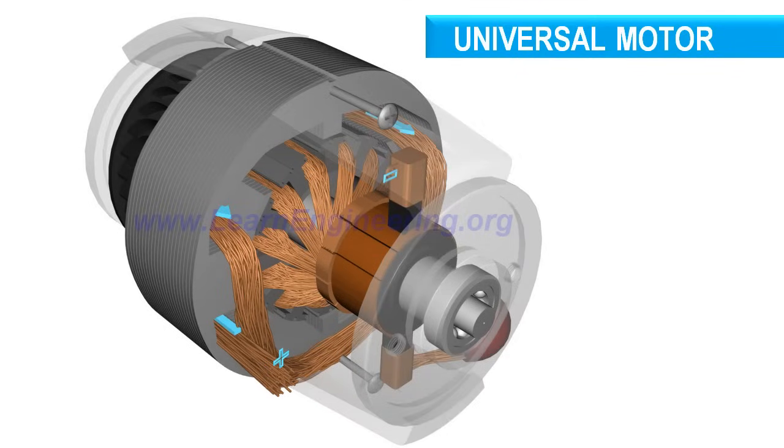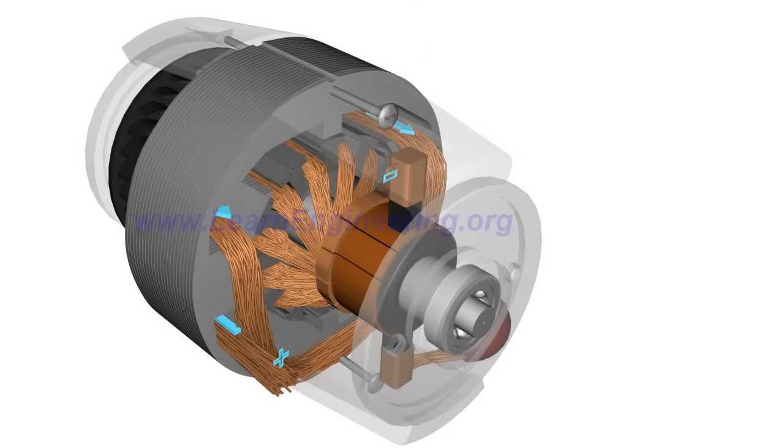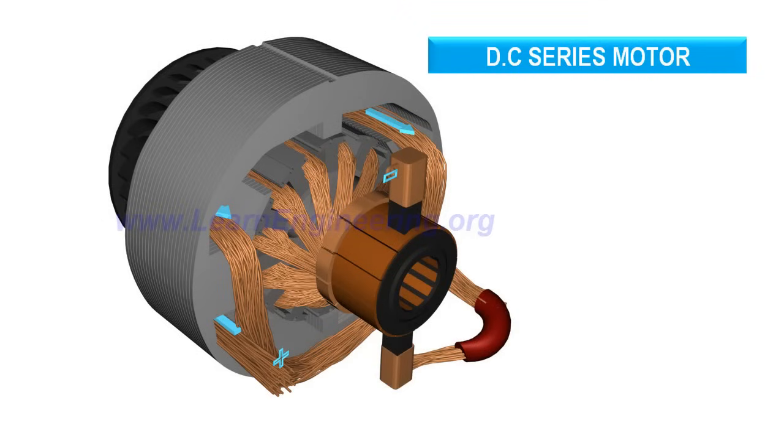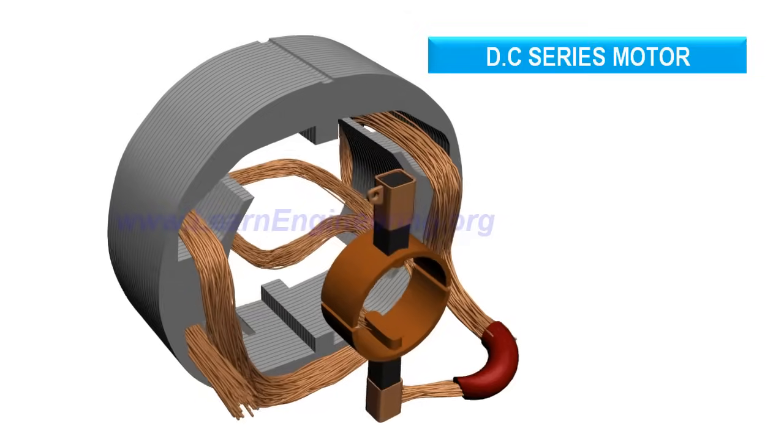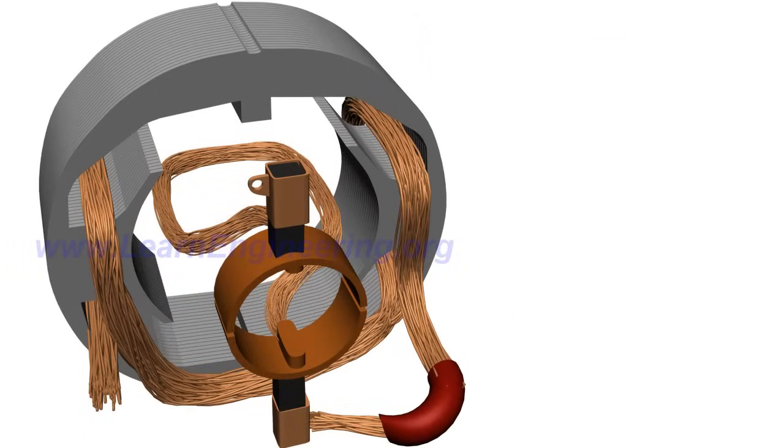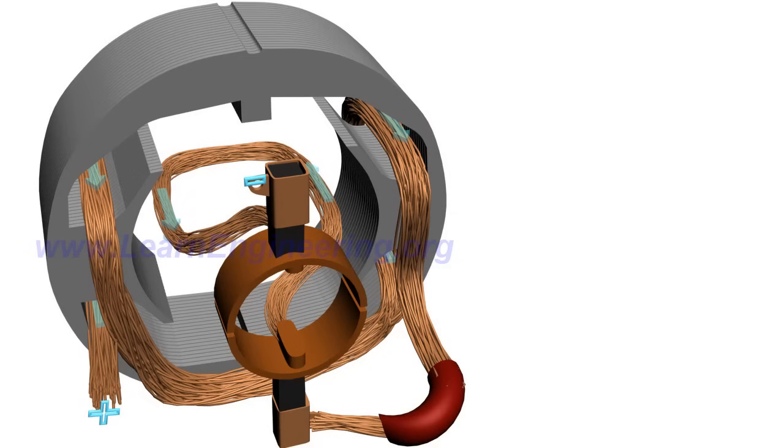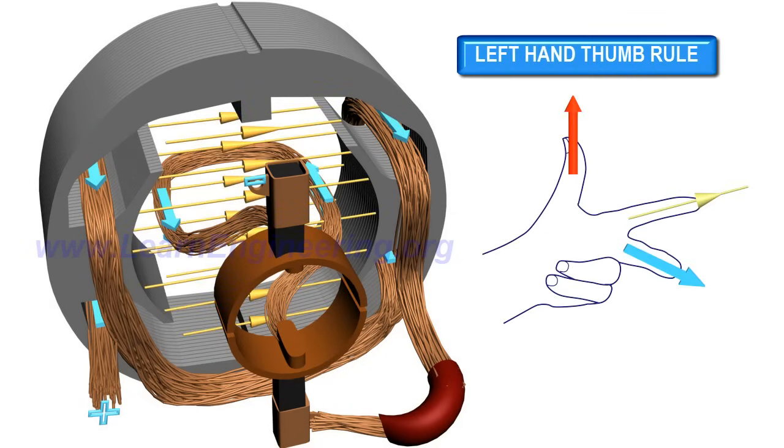A universal motor is a specially constructed DC series motor. Let's consider a simplified series motor. When connected to a DC power source, they work just like a DC motor.